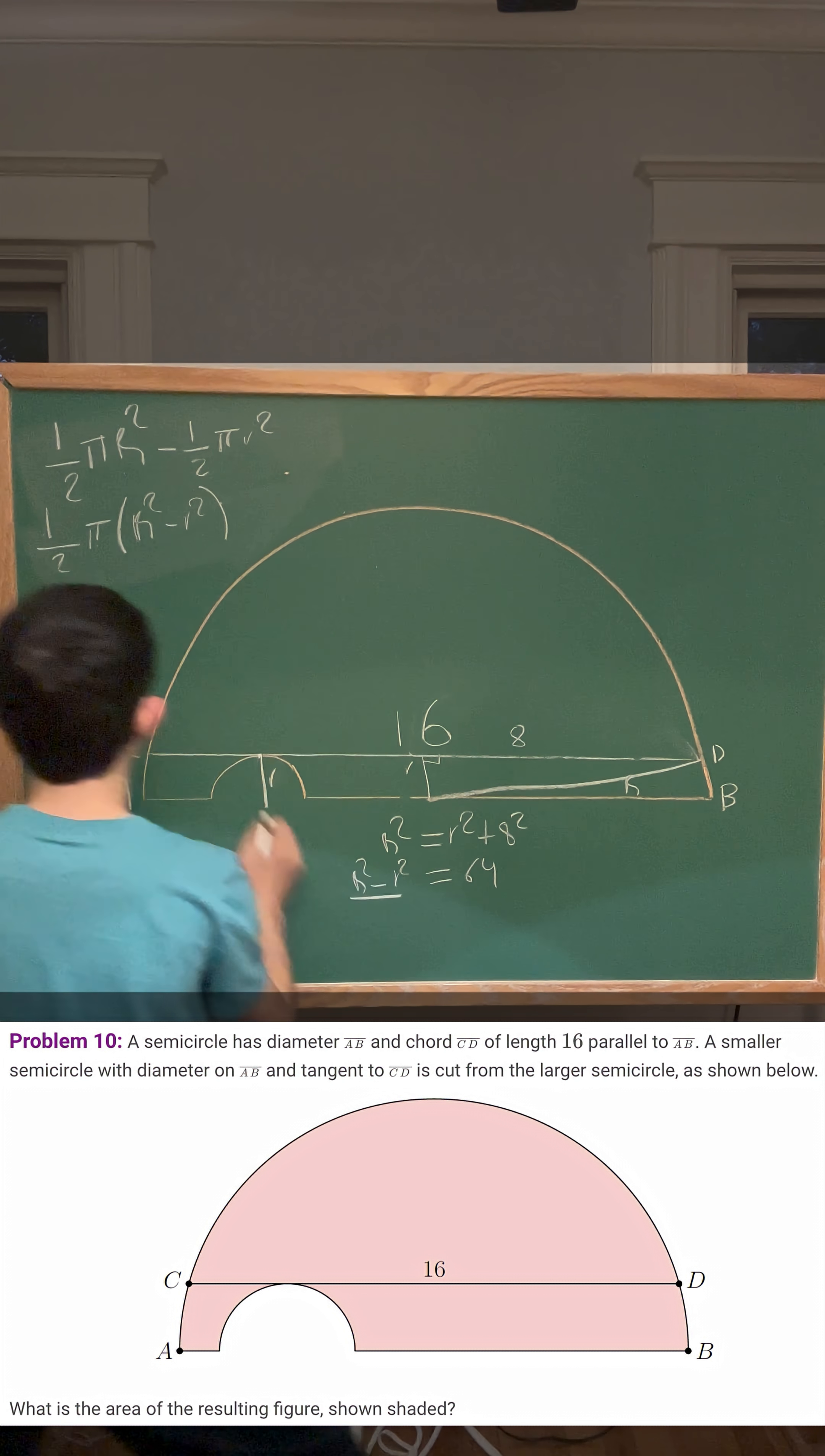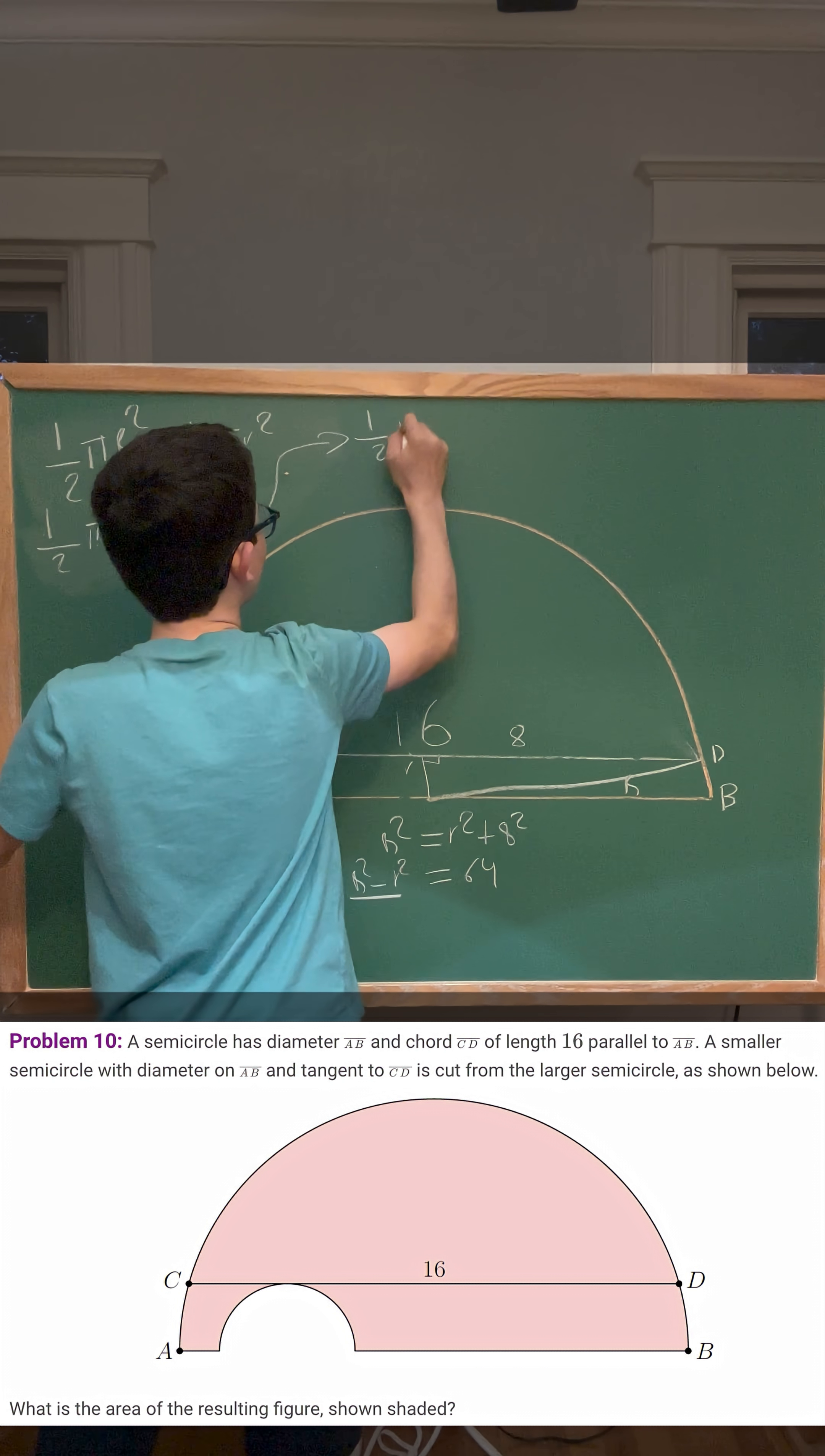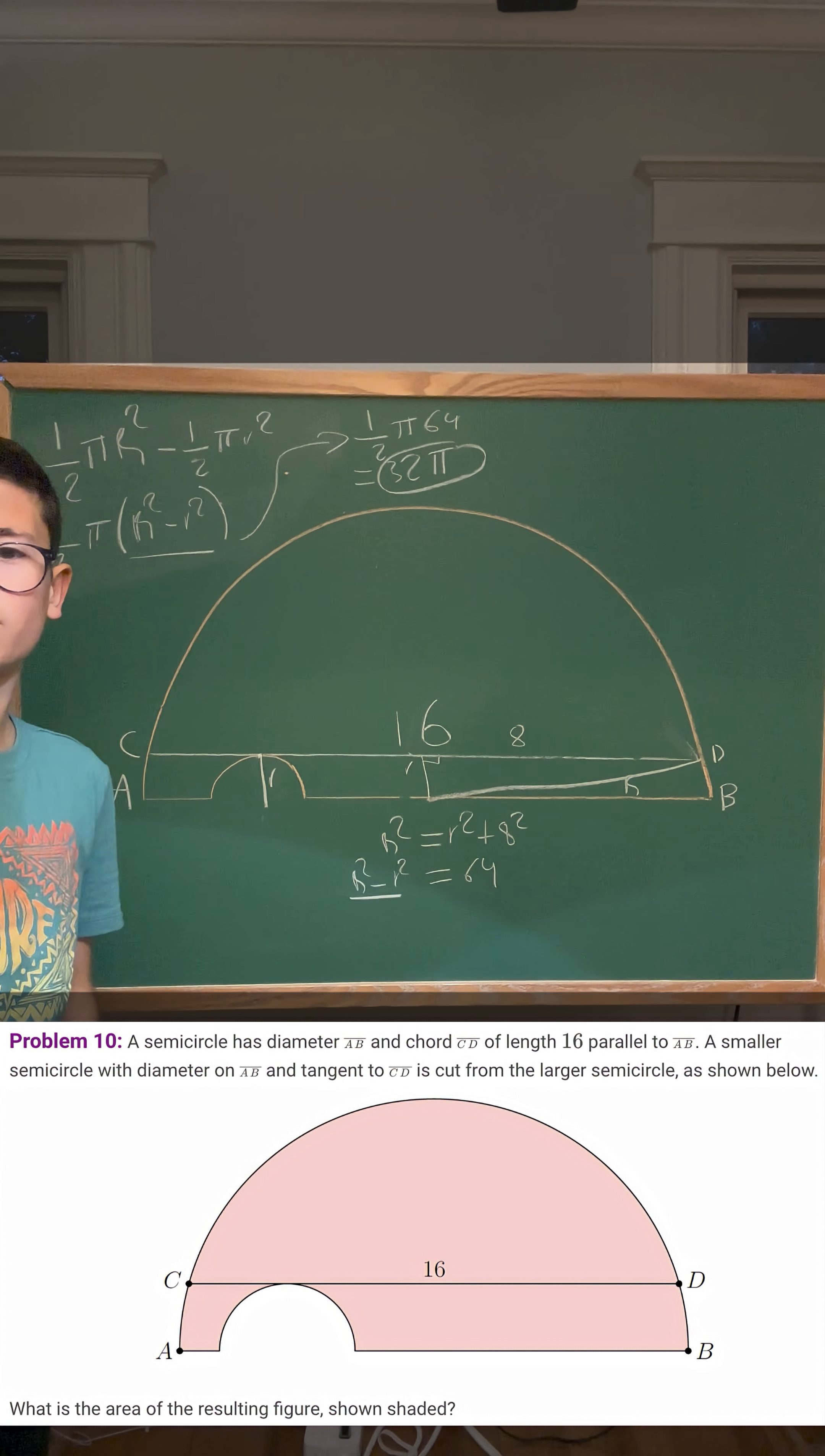We have our big R² minus little r², so if we write this here, it would be 1/2 π of 64, and 1/2 of 64 is 32, so it would equal 32π. 32π would be your final answer.